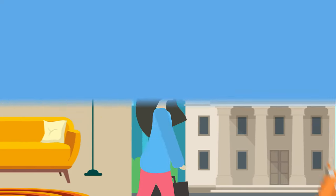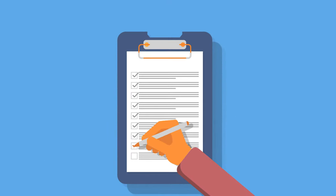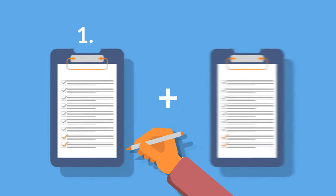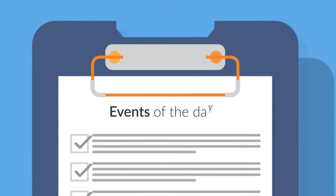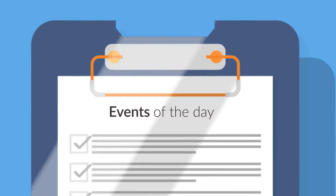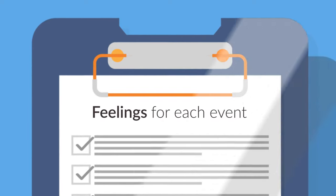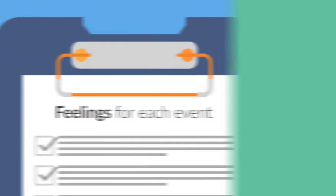One of the most effective ways to do this is to keep a log. In this log, you will record two sets of information. The first is a list of all the events that occurred in the course of your day. The second is a list of corresponding feelings you had in response to each event.